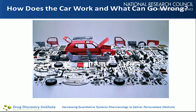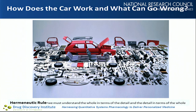This picture describes the challenge we have in understanding biological systems. How does the complete system work and what can go wrong? We have to understand what the parts are, but we can't study the parts and understand how the car runs, and you can't run the car and understand those parts that can go wrong. This reflects on the hermeneutic rule where we must understand the whole in terms of the detail and the detail in terms of the whole.